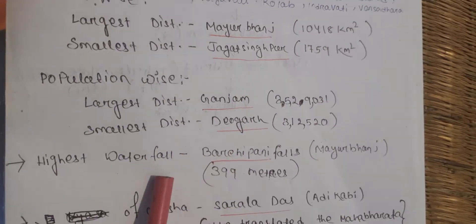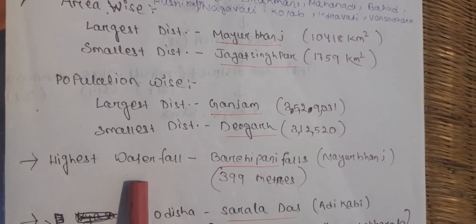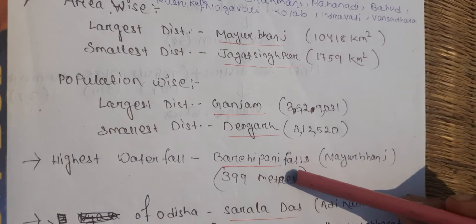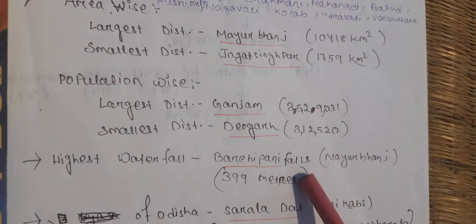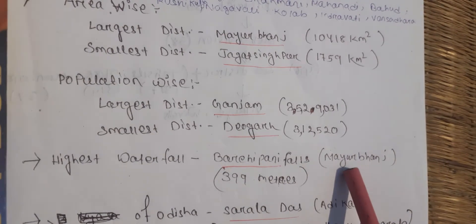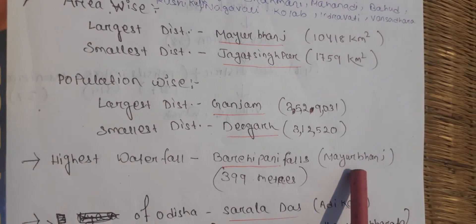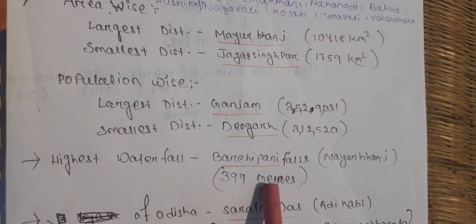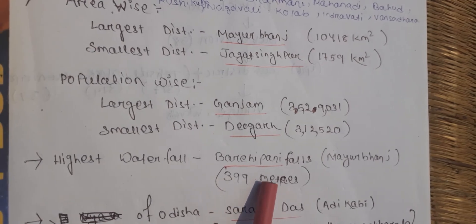The highest waterfall of Odisha is Barehipani Falls, located in Mayurbhanj district, at a height of around 399 metres.